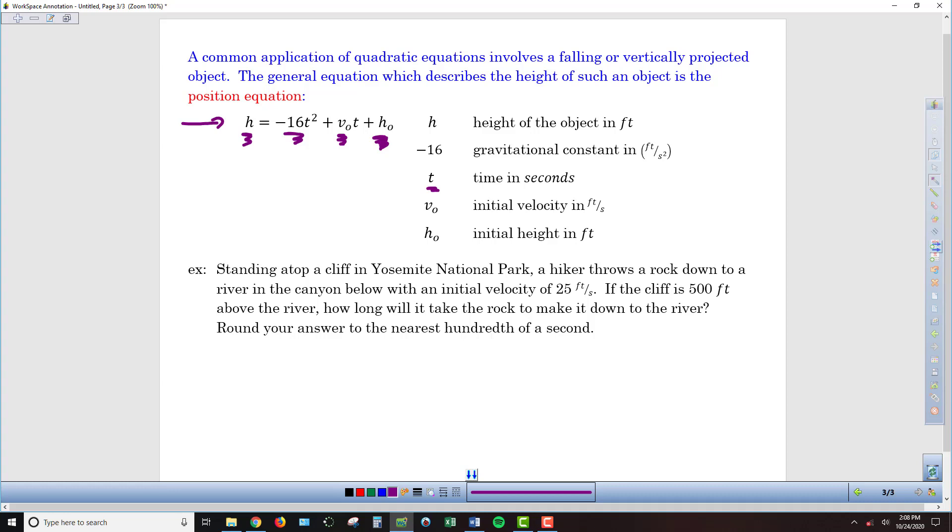So, we can use this equation to model the flight of an object that's being pulled down by gravity, even if it's been tossed up into the air. In the example that we have here, you're standing atop a cliff in Yosemite, and there's a hiker that throws down a rock to a river that's in a canyon below with an initial velocity of 25 feet per second.